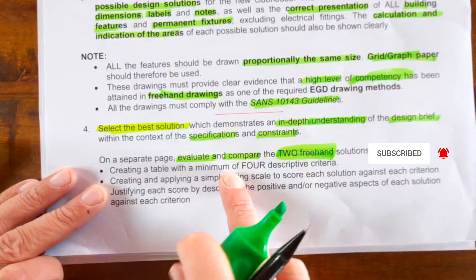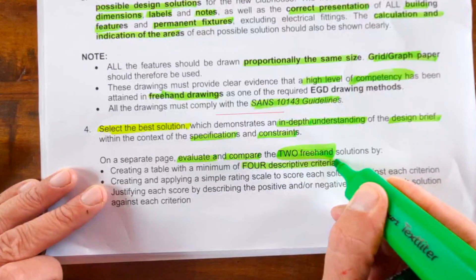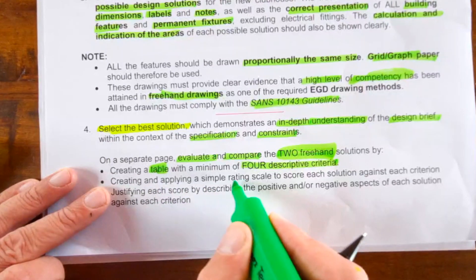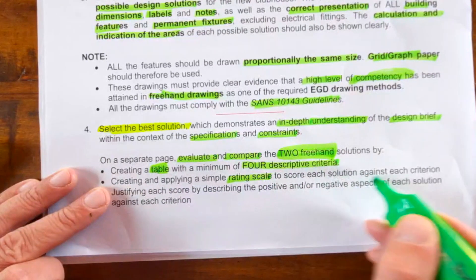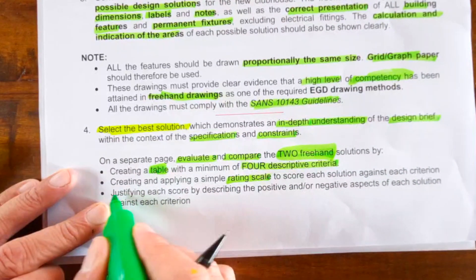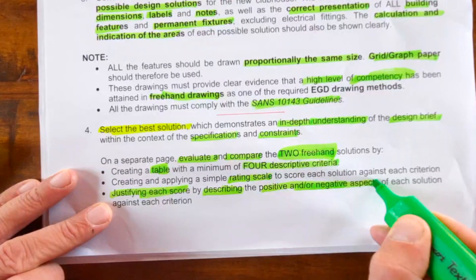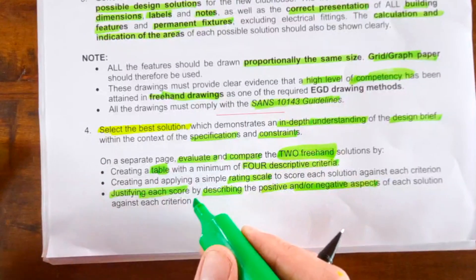By creating a table with a minimum of four description criteria, must be a table, creating and applying a simple rating scale to score each solution against each other and then in the end justify each score by describing the positives and negative aspects of each solution against each criteria.